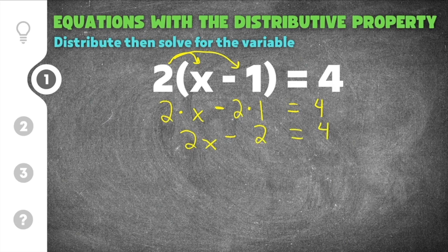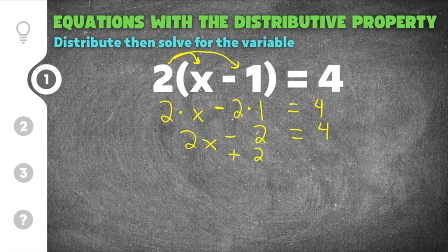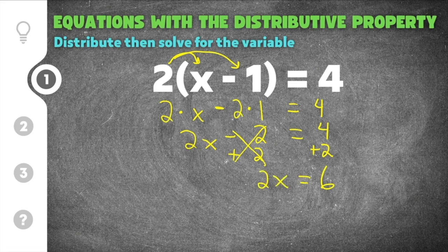From here, we put all the constants on one side and the variable on the other. We have 2x minus 2 equals 4. The opposite of minus 2 is plus 2, so by adding 2 to both sides, they cancel and the 2 moves to the other side. So 4 plus 2 is 6, giving us 2x equals 6.